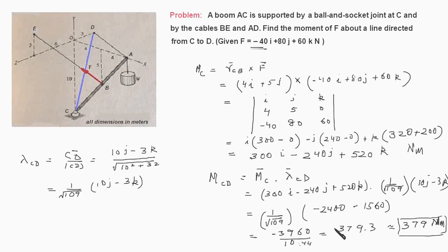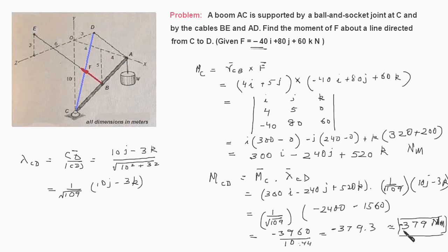So the answer is −379 newton·meters. This is a scalar quantity because we found the dot product of two vectors. The negative sign means the moment vector along CD is directed from D to C, not from C to D as we had assumed. That is the answer.